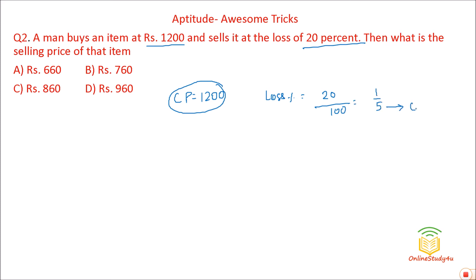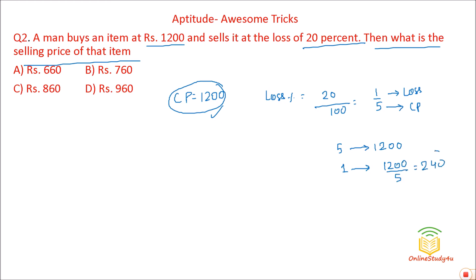Cost price here is 5, and the actual cost price is Rs. 1200. They are asking for the selling price. So 1 unit = 1200 ÷ 5 = 240. Cost price is 5 rupees, sold at a loss of 1 rupee, so selling price is 4 rupees. Therefore 4 units = 240 × 4 = Rs. 960. So the selling price is Rs. 960.